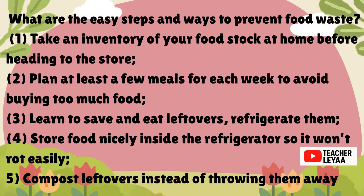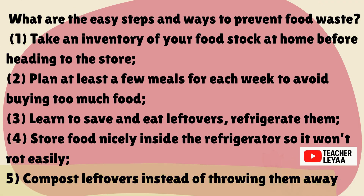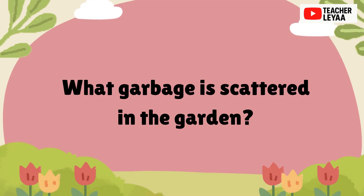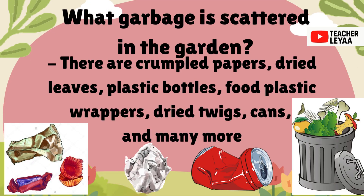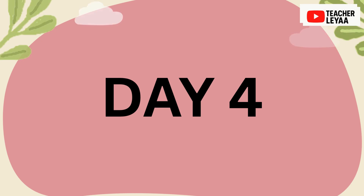What are the easy steps and ways to prevent food waste? What garbage is scattered in the garden? There are crumpled papers, dried leaves, plastic bottles, food plastic wrappers, dried twigs, cans, and many more.